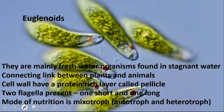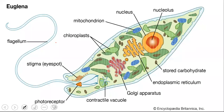Euglenoids are mainly freshwater organisms, also found in stagnant water. They are considered the connecting link between plants and animals. Instead of a cell wall they have a protein-rich layer called a pellicle. They have two flagella — one very short and sometimes not easily distinguished, and one long flagellum. Their mode of nutrition is mixotrophic, meaning it includes both autotrophic and heterotrophic nutrition.